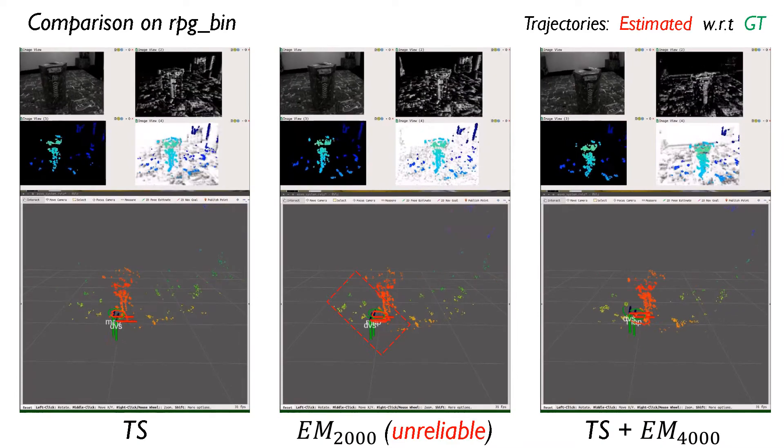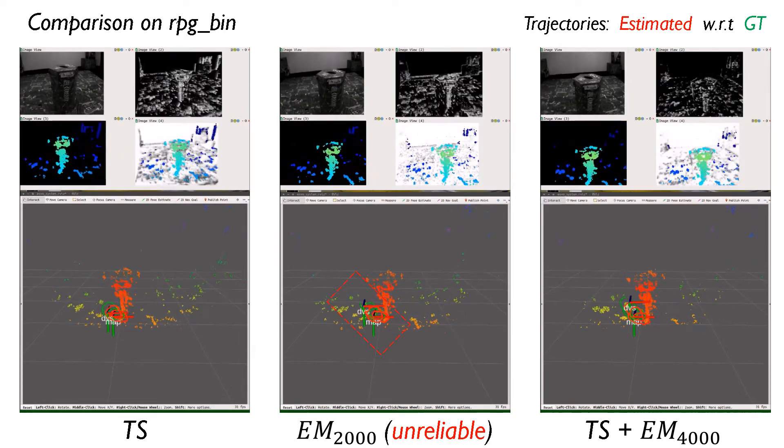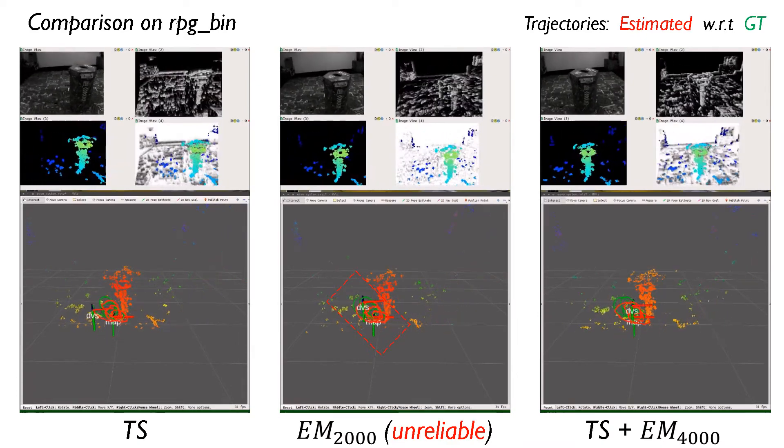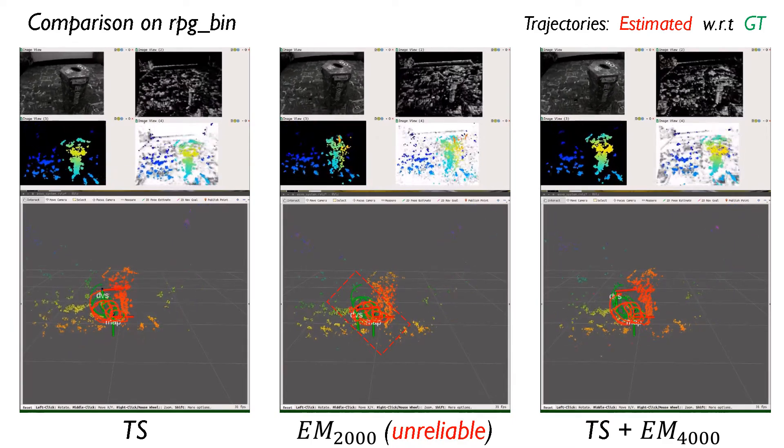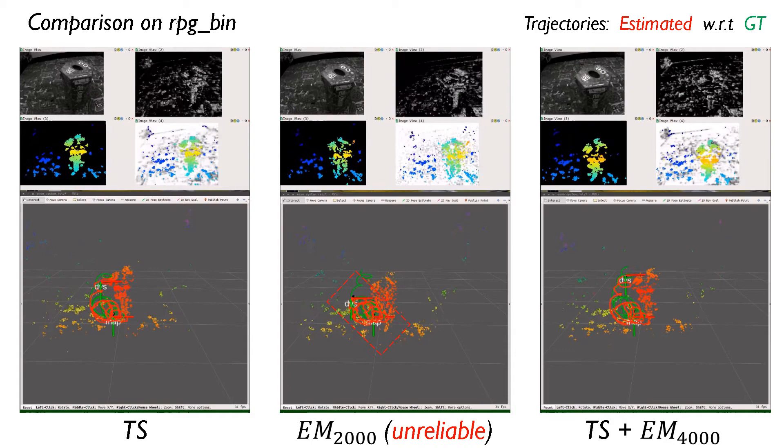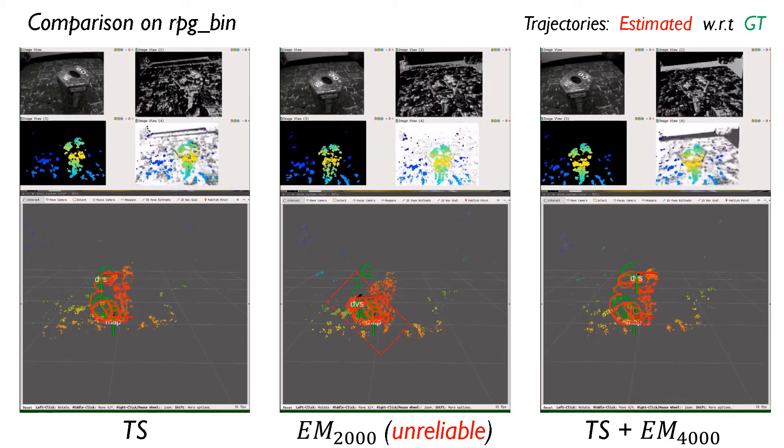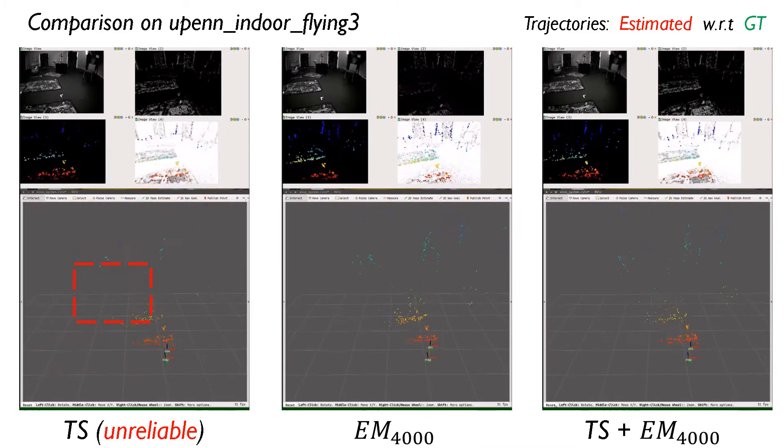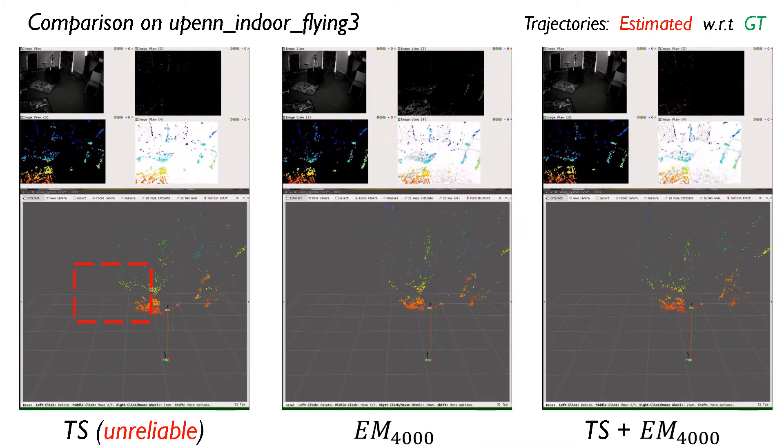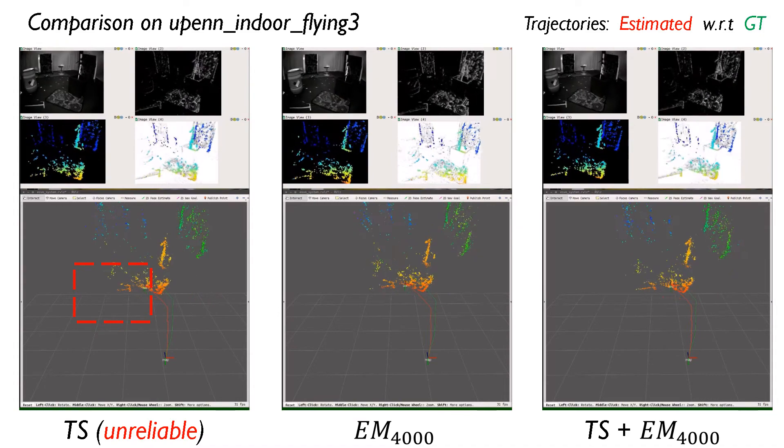The EM-based tracker becomes unreliable on this sequence. But on the UPAN sequence, the TS-based tracker becomes unreliable.